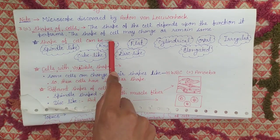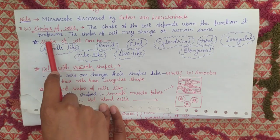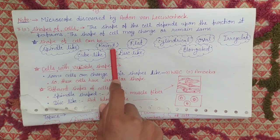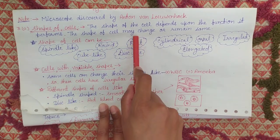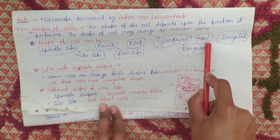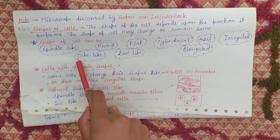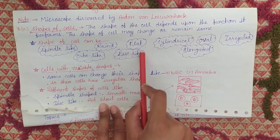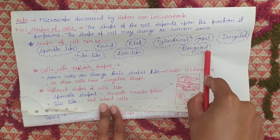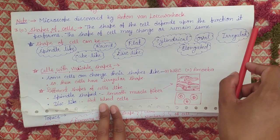So there are some shapes you will see here. The shape of a cell can be spindle-like, round, flat, cylindrical, oval, irregular, cube-like, disc-like, or elongated. These are the names of the shapes of cells.